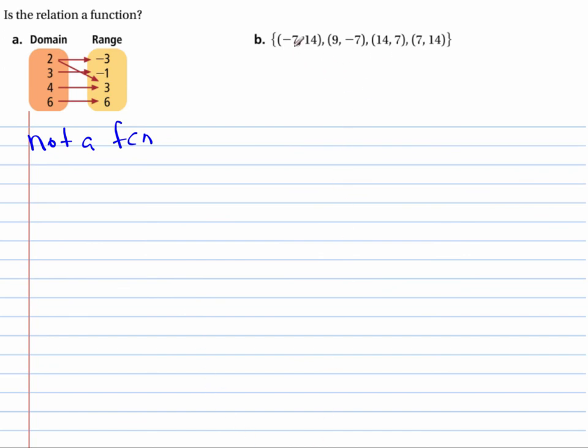Is this one a function? Let's see. I have negative 7, 9, 14, and 7. All of my inputs are unique. And so they can only have one output. So the negative 7 maps to 14, the 9 maps to negative 7, the 14 maps to 7, and the 7 maps to 14. So they're all unique. So this one is a function.